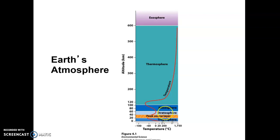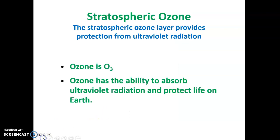I'm going to go through what caused some of these holes in the ozone layer and what progress we have made to reverse this situation. This slide covers what I've already spoken about: the stratospheric ozone layer provides protection from ultraviolet radiation. Ozone is O3 and it has the ability to absorb radiation and protect the cells on Earth.